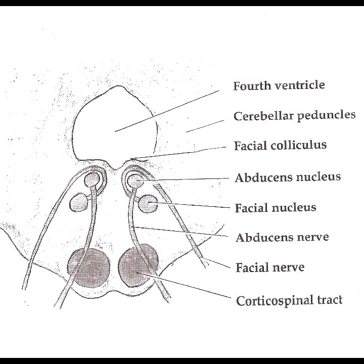Structure and Nucleus of the Abducens Nerve. In an axial section of the brainstem at the level of the facial colliculus, the Abducens Nucleus is located in the PONS, on the floor of the 4th Ventricle, at the level of the facial colliculus. Axons from the facial nerve loop around the Abducens Nucleus, creating a slight bulge — the facial colliculus — that is visible on the dorsal surface of the floor of the 4th Ventricle.